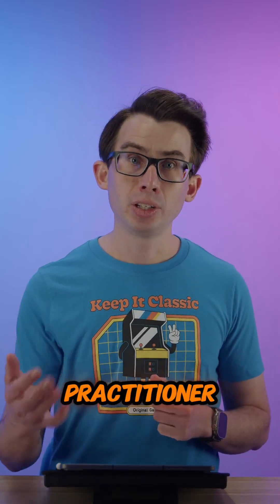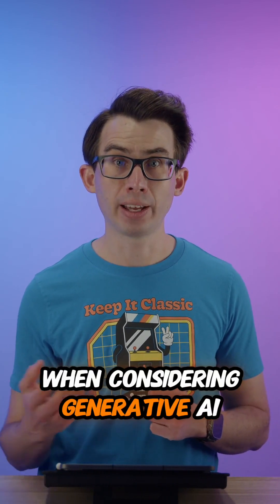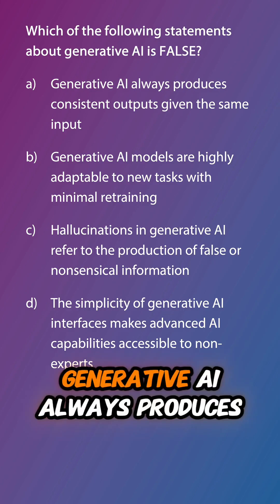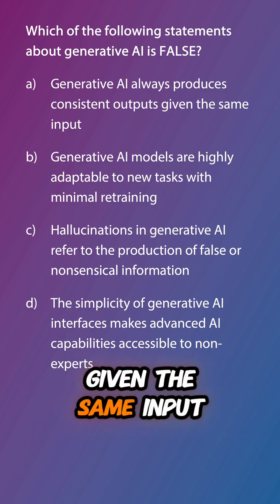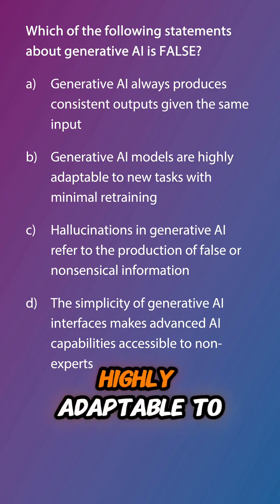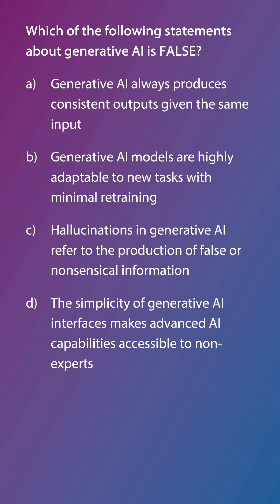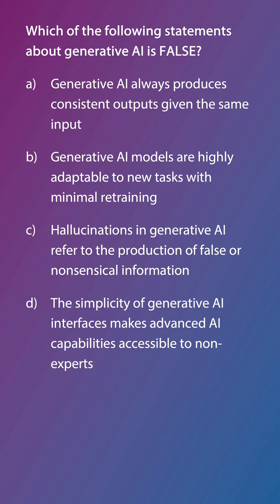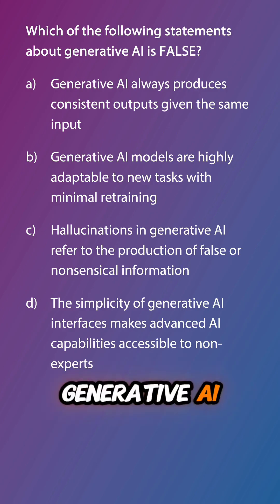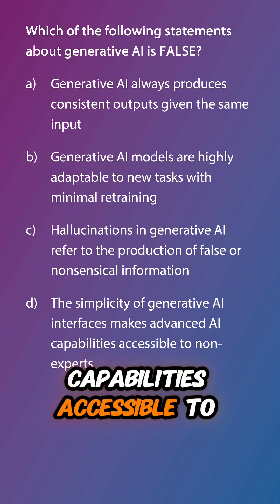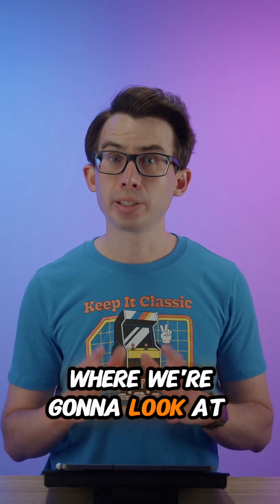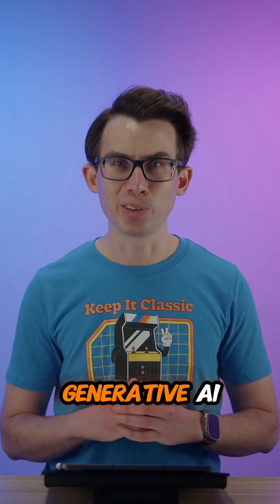As an AI practitioner, you'll need to weigh these factors when considering generative AI solutions for various use cases. Let's do a review question to finish off. Which of the following statements about generative AI is false? A. Generative AI always produces consistent outputs given the same input. B. Generative AI models are highly adaptable to new tasks with minimal retraining. C. Hallucinations in generative AI refer to the production of false or nonsensical information. Or D. The simplicity of generative AI interfaces makes advanced AI capabilities accessible to non-experts. Post your answer in the comments and we'll review this next episode, where we're going to look at the factors we should consider when selecting generative AI models.